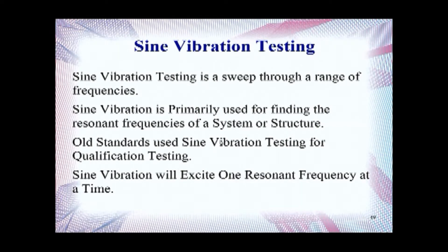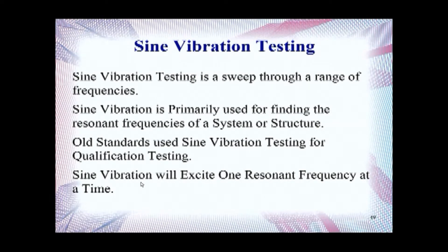Sine Vibration Testing is primarily used for finding the resonant frequencies of a system or structure. It is typically not used for actual screening or qualification testing of your unit, but in older standards, qualification testing was done using Sine Vibration Testing due to the limitation of technology at the time — random vibration was not feasible at one point in time. Sine Vibration will excite one resonant frequency at a time, which is why it is not useful for finding all the failure modes for your test. That's why you need more complex vibrations or random vibration testing.